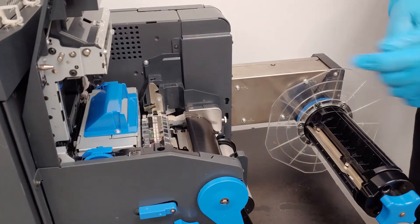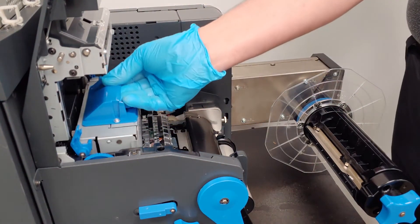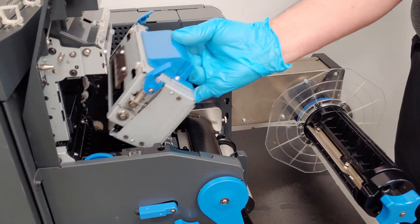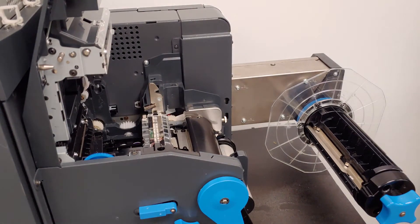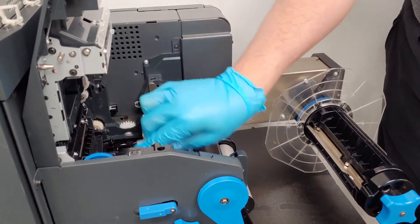Release the cutter unit by lifting the retaining latches. Lift the cutter unit by the handle straight out of the unwind unit. Gently wipe the two transparent plastic surfaces.